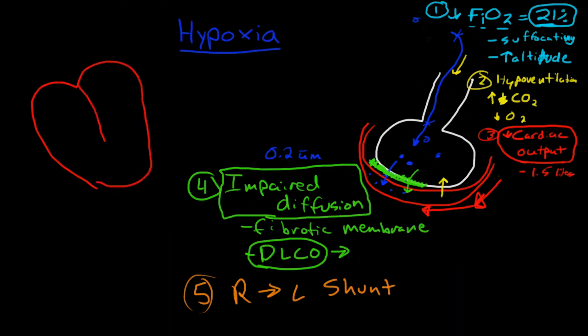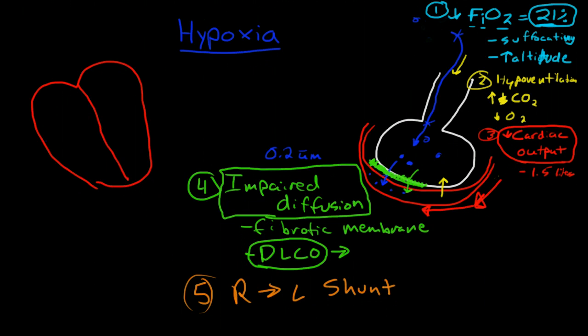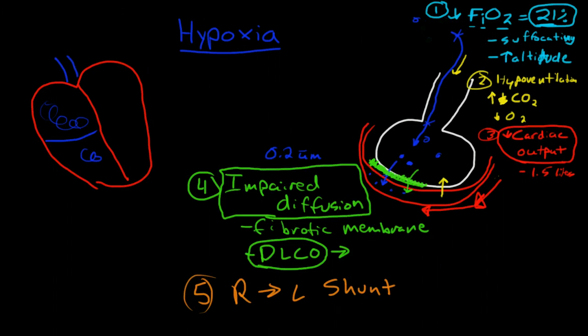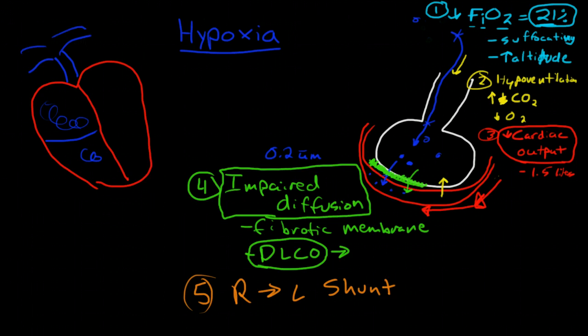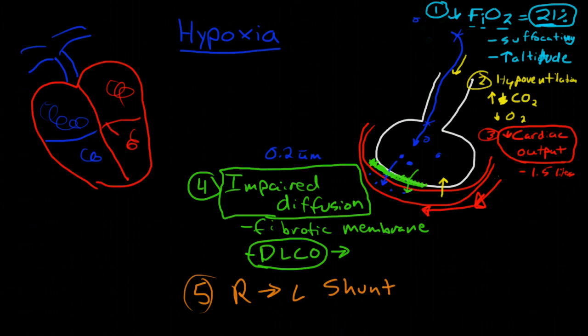So remember, on the right side of the heart, which has unoxygenated blood, we have going through the pulmonary arteries and into the lungs. And on the left side of the heart, we have oxygenated blood, and that leaves the left ventricle through the aorta into the systemic circulation.